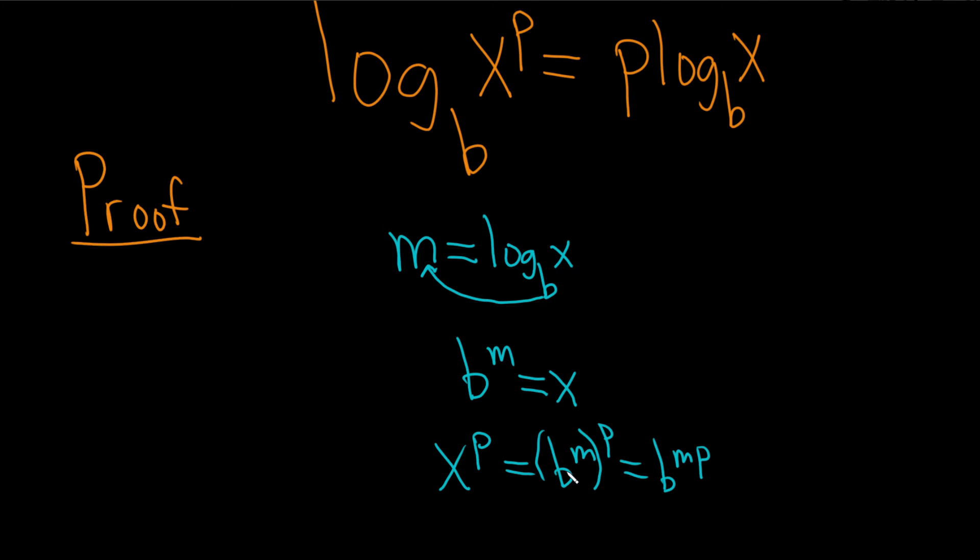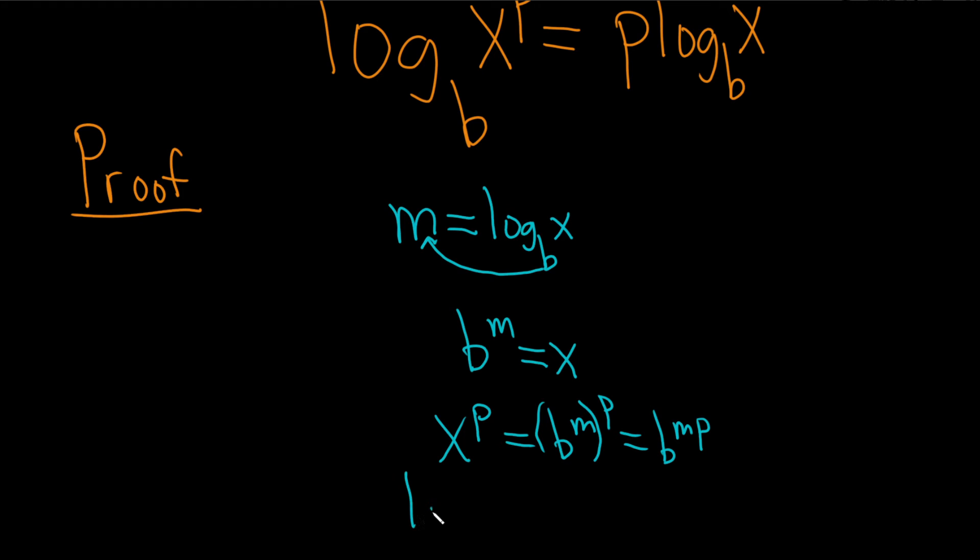And now we'll take the log of both sides. So log base b of x to the p. What is that? That's the log base b of b to the mp. I'm taking the log of both sides of this equation.